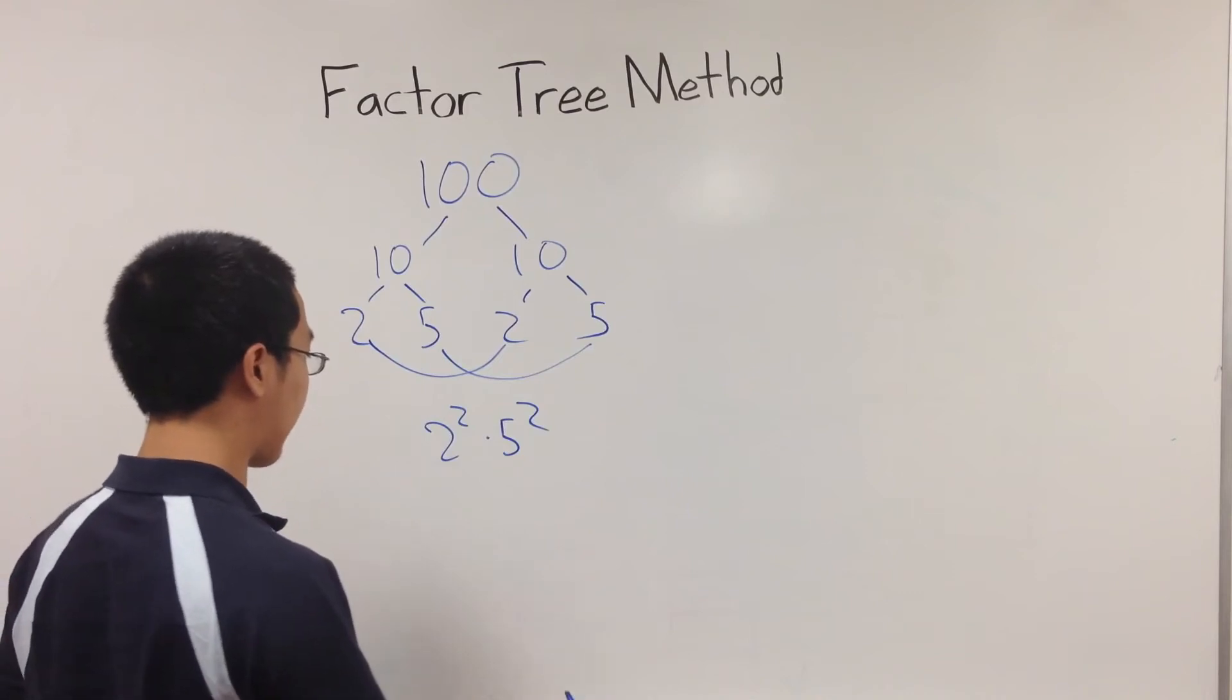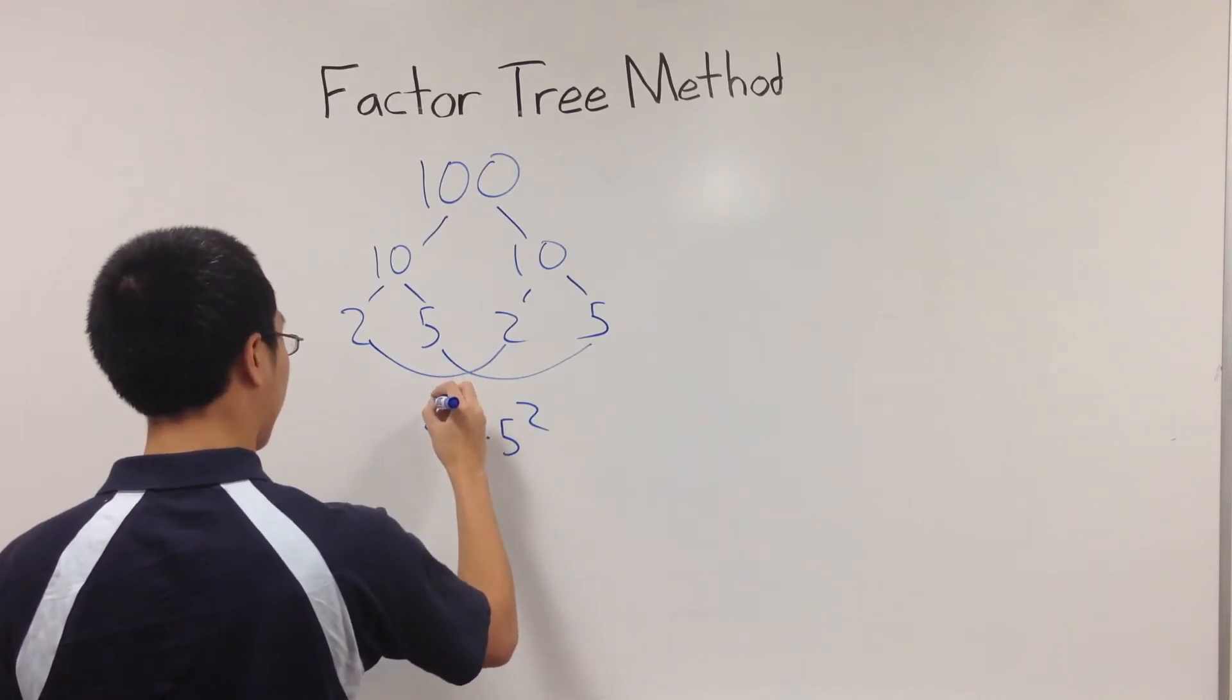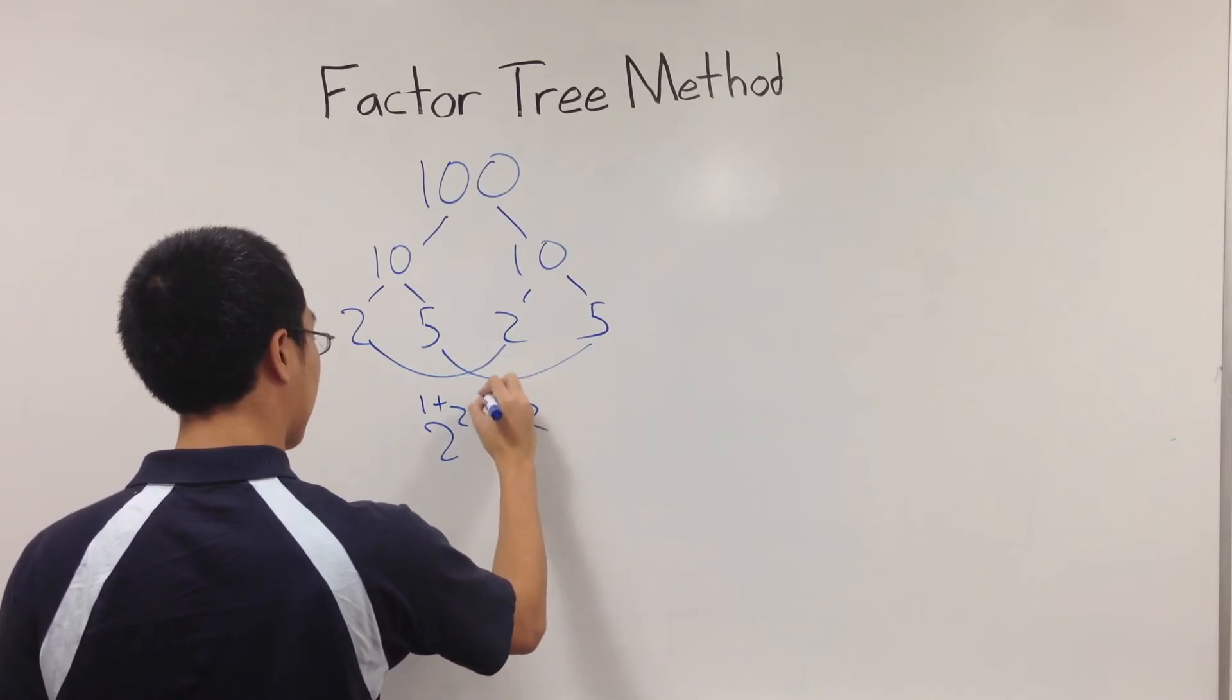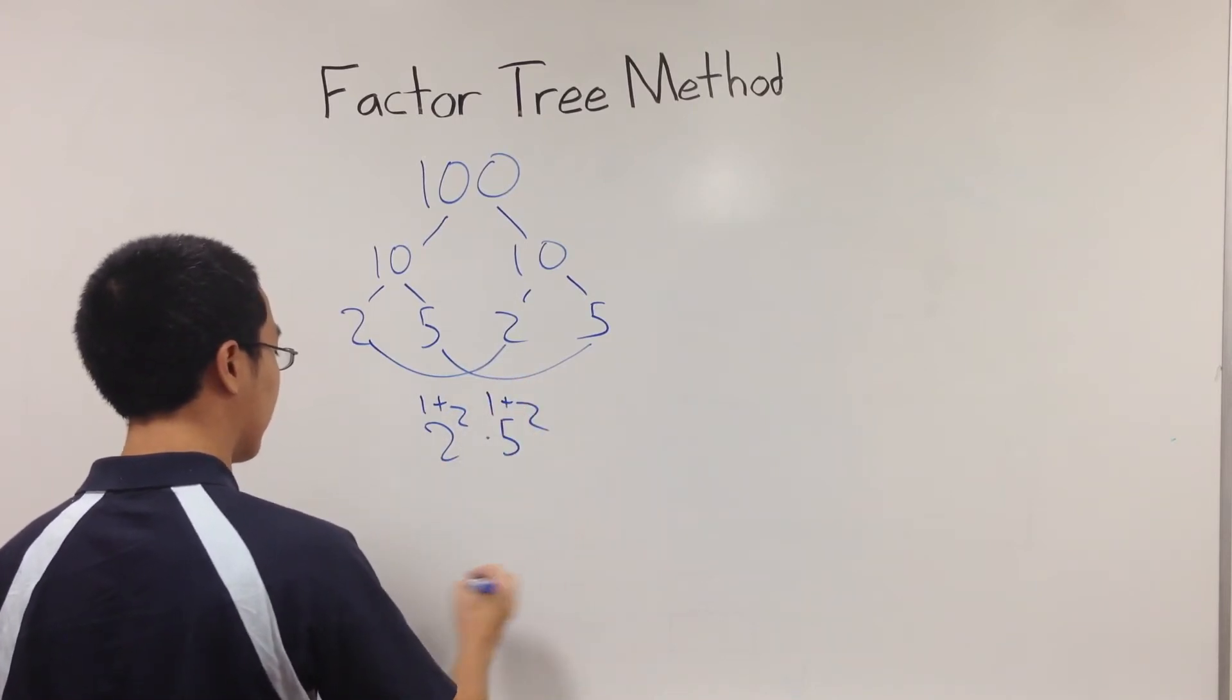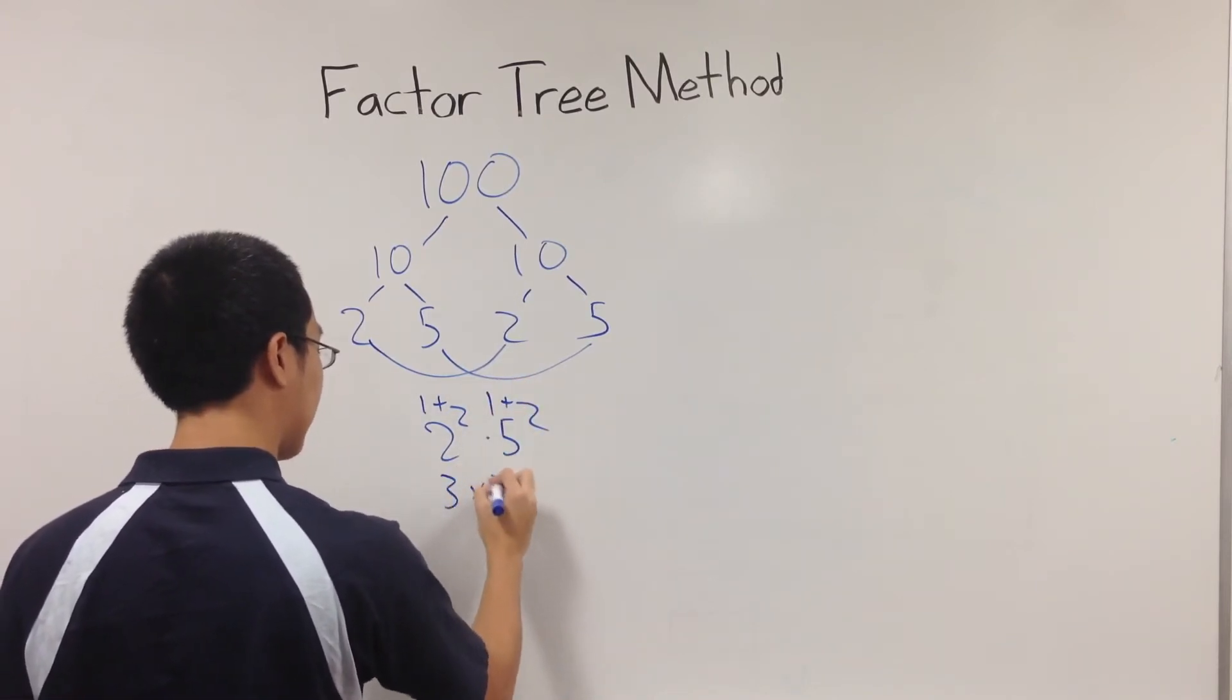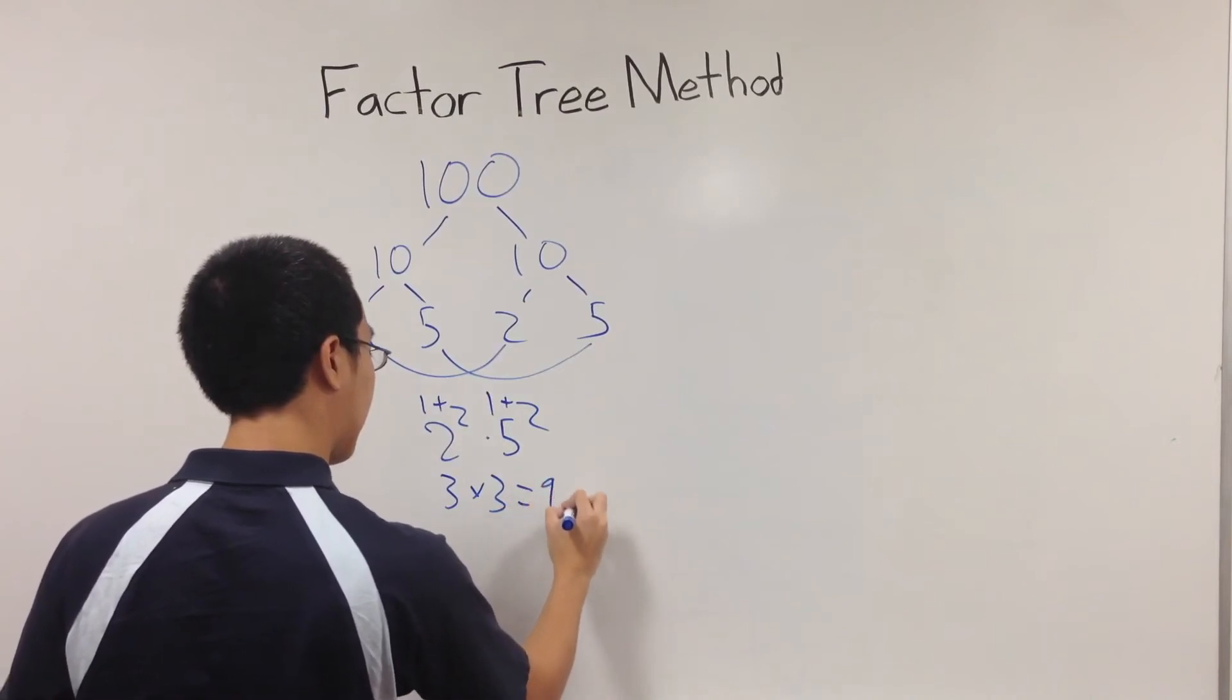This lets you find the number of factors through the method by adding 1 to the exponents, then multiplying them together. So in this case, 3 times 3, there are 9 total factors.